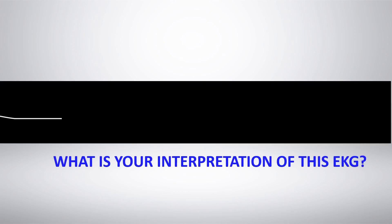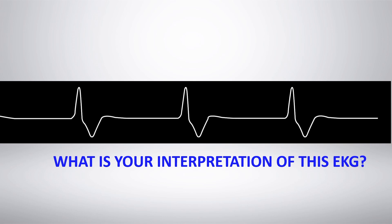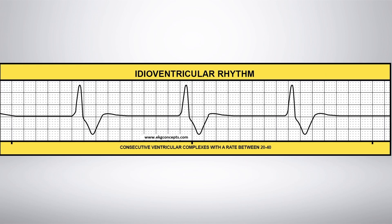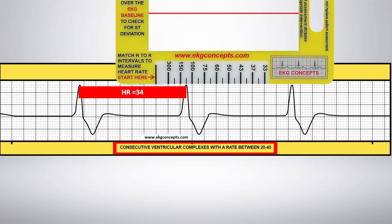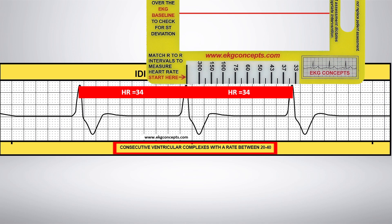What is your interpretation of this EKG rhythm strip? Idioventricular rhythm. Align the EKG badge on the R to R intervals to measure the heart rate. The heart rate is consistently 34 beats per minute.